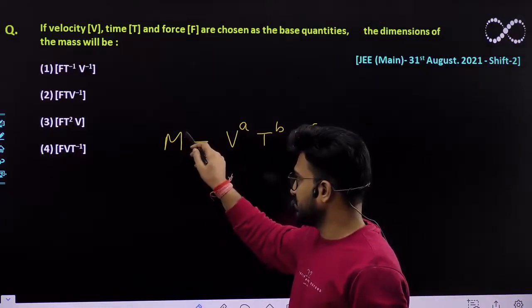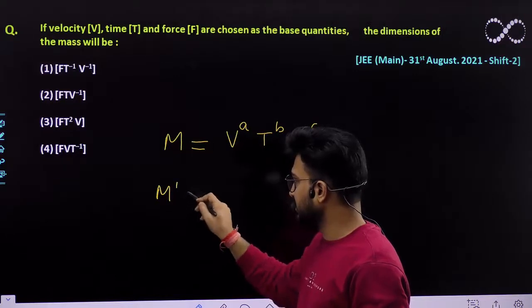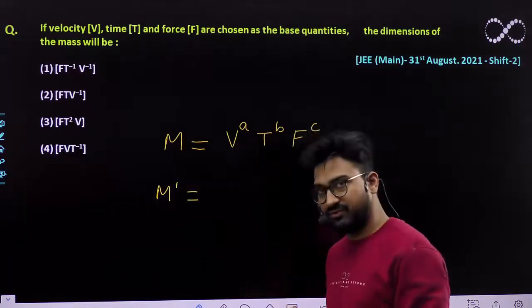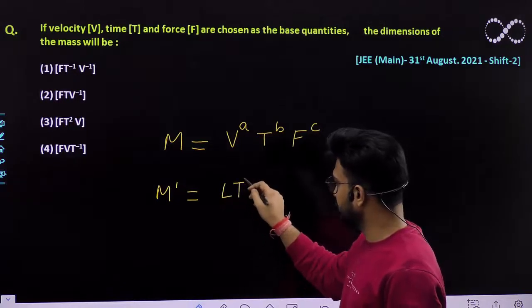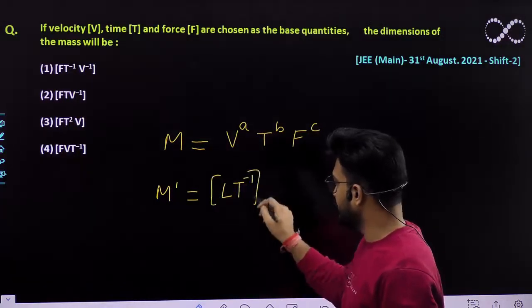Here the dimension of mass is M only, so M^1. What about the dimension of speed or velocity? It is LT^-1 raised to power a.